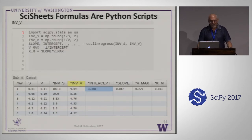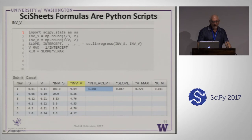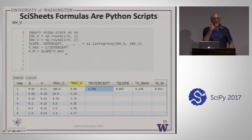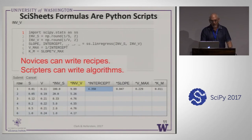You can also have a formula for a cell that is an entire script. For example, the INVV column doesn't just compute the inverse — it can assign values to other columns too, like slope and intercept, and it imports the SciPy stats package. Not only is this rich in terms of expressing an algorithm, it puts in one place the code that is essentially the computational recipe. So novices can write simple recipes, and scripters can write full algorithms and be very expressive in what they calculate.